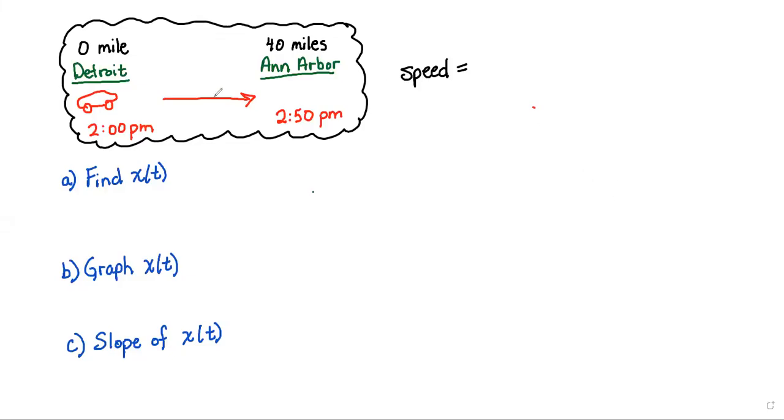All right, here we have Jason going from Detroit through Ann Arbor. It takes 40 miles to get from Detroit to Ann Arbor, and it takes them, as you can see, from 2 o'clock to 2:50, so 50 minutes. Before we answer the questions in this problem, let's go ahead and find the speed.